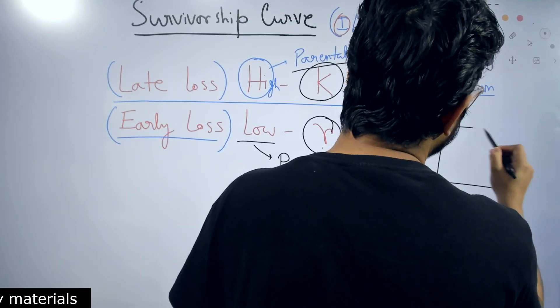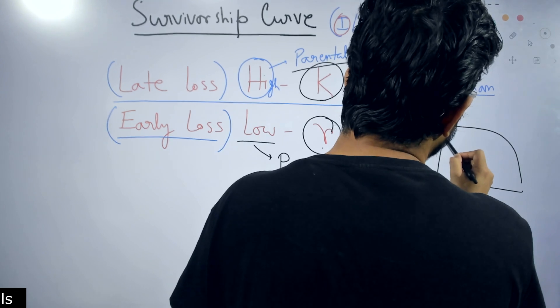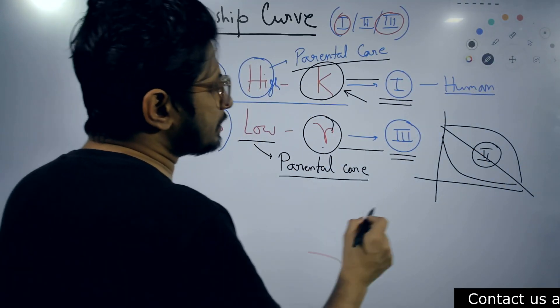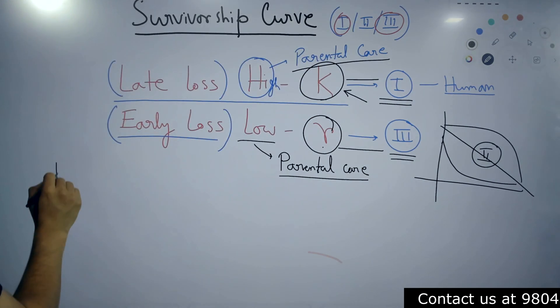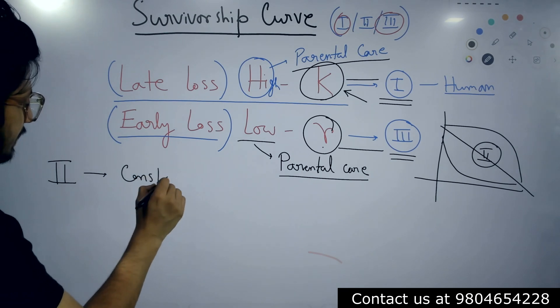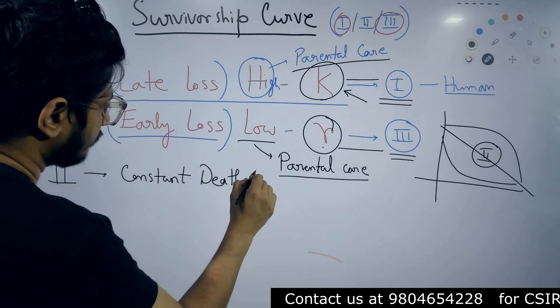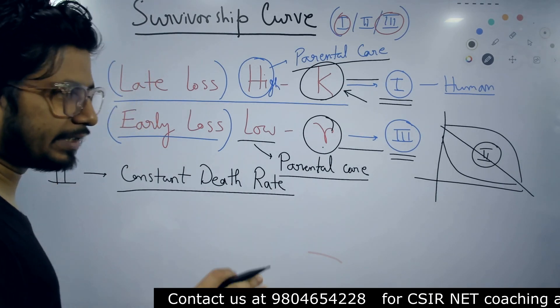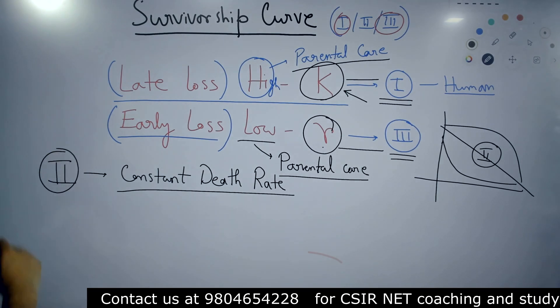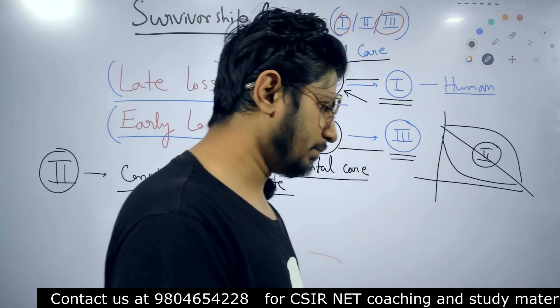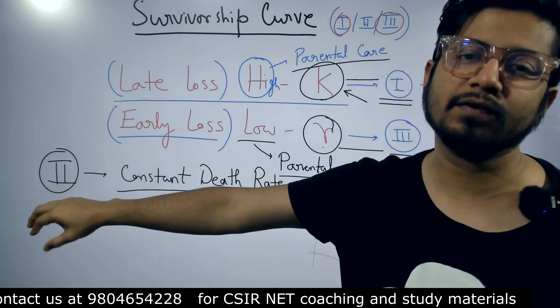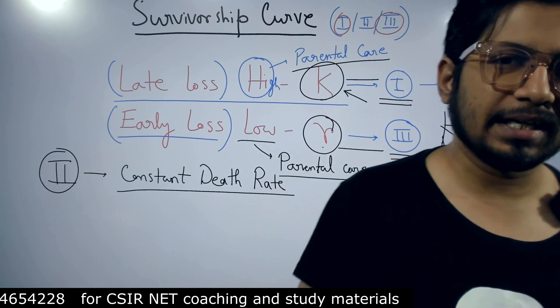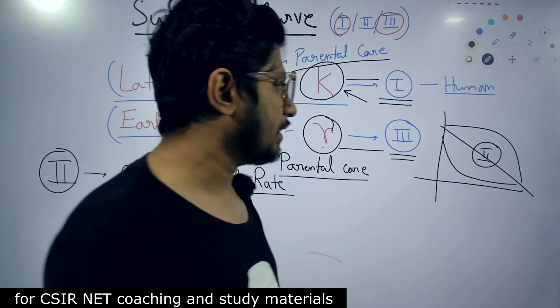If you look at the curve, Type 1 looks something like this, Type 3 something like this, and Type 2 something like this. Type 2 has a constant death rate. So Type 2 survivorship curve has constant death rate. At any given point of their age, the chance of their death is equal—constant. That is Type 2 survivorship curve. Constant death rate is achieved because most of the time these organisms belonging to Type 2 survivorship curve are prey, so predators will always catch them and eat them. There is no such changes in their graph pattern. Straight line is for Type 2.